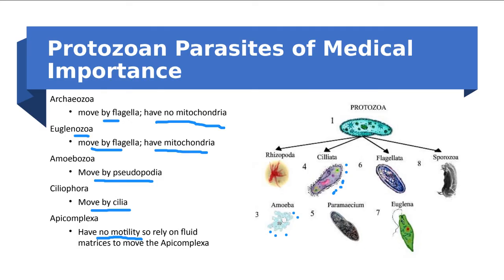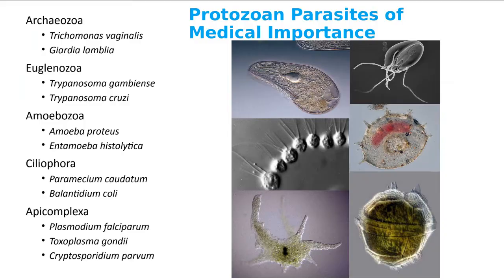Here are the organisms you're responsible for. Under Archaeozoa: Trichomonas vaginalis and Giardia lamblia. Under Euglenozoa: Trypanosoma brucei gambiense and Trypanosoma cruzi. Amoebozoa: Amoeba proteus and Entamoeba histolytica. Ciliophora: Paramecium caudatum and Balantidium coli. And the Apicomplexa, the bad boys of the group: Plasmodium spp., Toxoplasma gondii, and Cryptosporidium parvum.